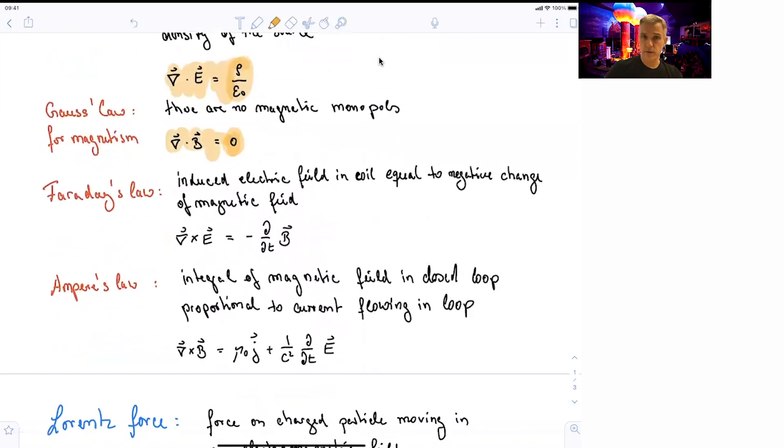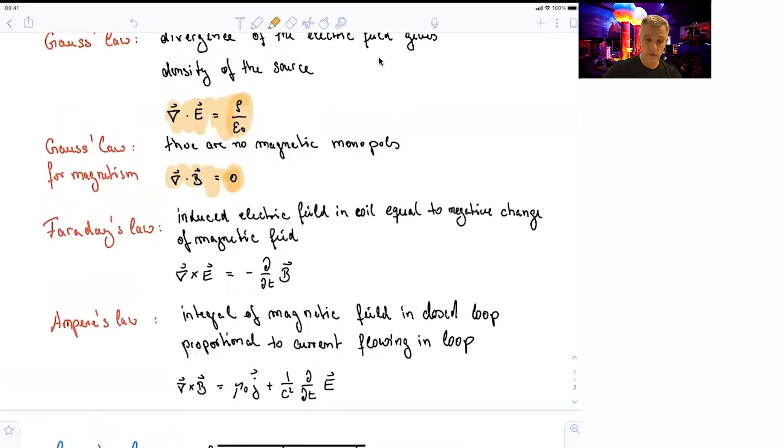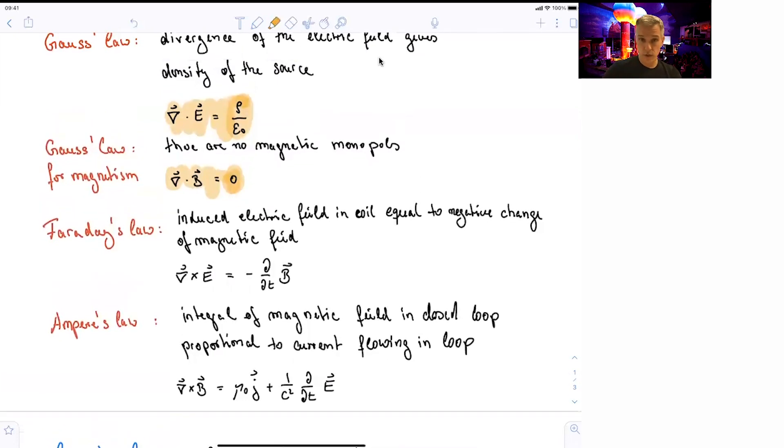And we have Faraday's law, which means that you can induce electric fields in a coil equal the negative change of the magnetic field. In other way, if you want to create an electric field, you can do this with a charge. Or you can do this by changing, as a function of time, the magnetic field. Changing magnetic fields generate electric fields.